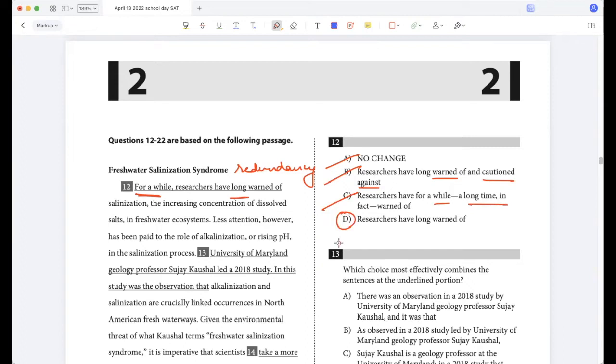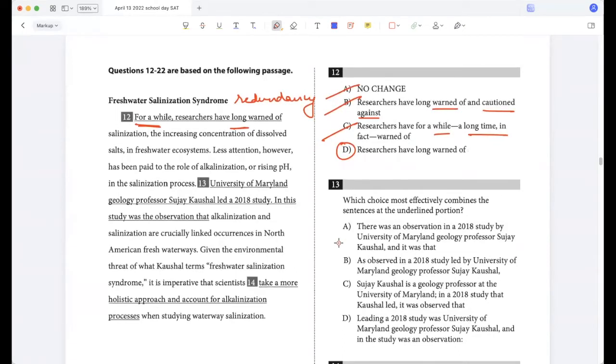Less attention however has been paid to the role of alkalinization or rising pH in the salinization process. University of Maryland geology professor Sujay Kaushal led a 2018 study. In this study was the observation that alkalinization and salinization are crucially linked occurrences in North American freshwaterways. So we need to combine these sentences. There was an observation in a 2018 study by University of Maryland geology professor Sujay Kaushal, and it was that as observed in a 2018 study led by University of Maryland geology professor Sujay Kaushal.